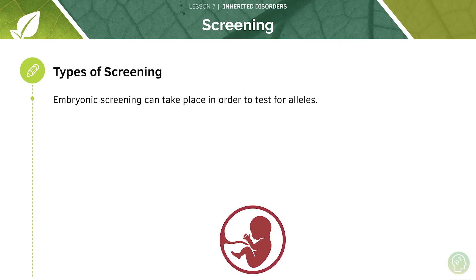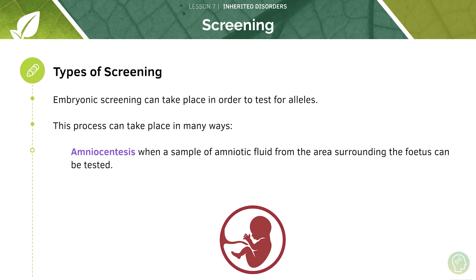We can screen for inherited disorders - this is called embryonic screening because we're screening the developing baby - and this can take place to test for certain risk alleles for genetic disorders. One method is amniocentesis, where a sample of amniotic fluid from the area surrounding the fetus is tested. The amniotic fluid is in the gap between the fetus and the placenta, it contains fetal cells, and we insert a little needle to sample this fluid, which can tell us a lot about the genetics of the fetus.